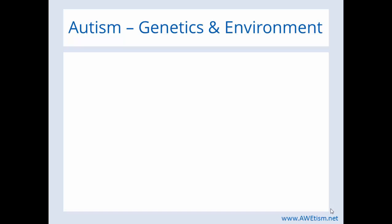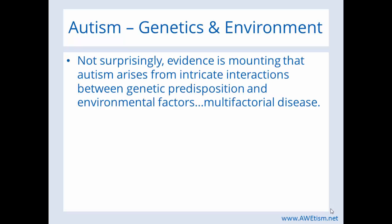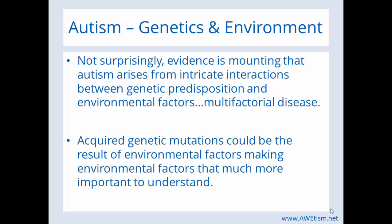Autism — there's that whole dynamic between whether it's more genetic or environmental causes. Not surprisingly, evidence is mounting that autism arises from intricate interactions between genetic predisposition and environmental factors. It's called a multifactorial disease. Acquired genetic mutations could be the result of environmental factors, making environmental factors that much more important to understand.